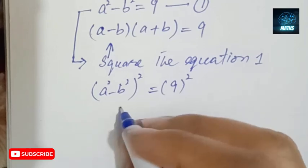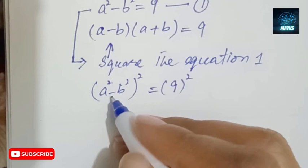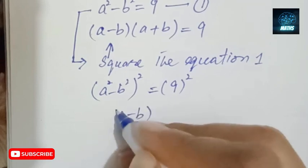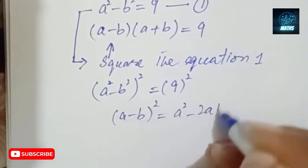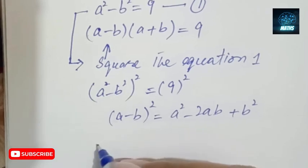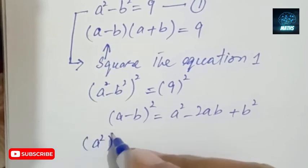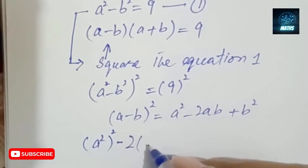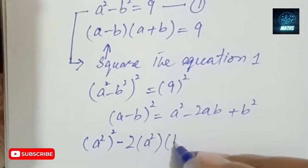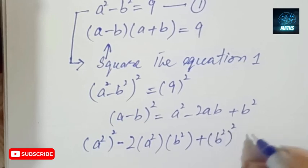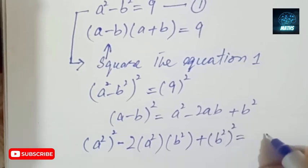Now solving this, I can open the identity. You all know that (a minus b)² equals a² minus 2ab plus b². So applying this: (a²)² minus 2·a²·b² plus (b²)² equals 81. That is, a⁴ minus 2a²b² plus b⁴ equals 81.